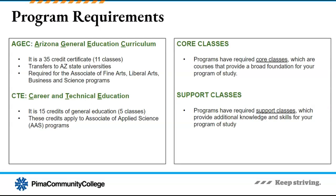We also want you to understand program requirements. Programs can either be an associate degree or a certificate, but the Arts Division only offers associate degrees — no certificates are offered. Associate degrees that transfer to a university will contain the AGEC, which stands for Arizona General Education Curriculum. It requires 35 credits, equaling a total of 11 general education classes, and demonstrates to Arizona State Universities that you have completed your general education requirements. The Arizona State Universities include University of Arizona, Arizona State University, and Northern Arizona University.